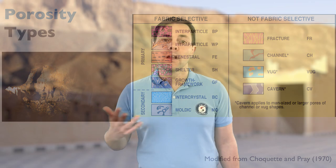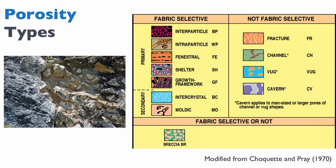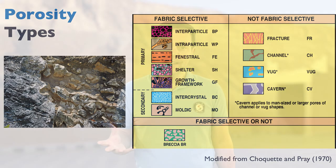Some porosities can be qualified as either fabric selective or not fabric selective depending on your point of view. The first example is breccia porosity — the porosity between the breccia fragments. This is fabric selective if you consider that the fabric of the rock is the breccia itself, in which case it is fabric selective.